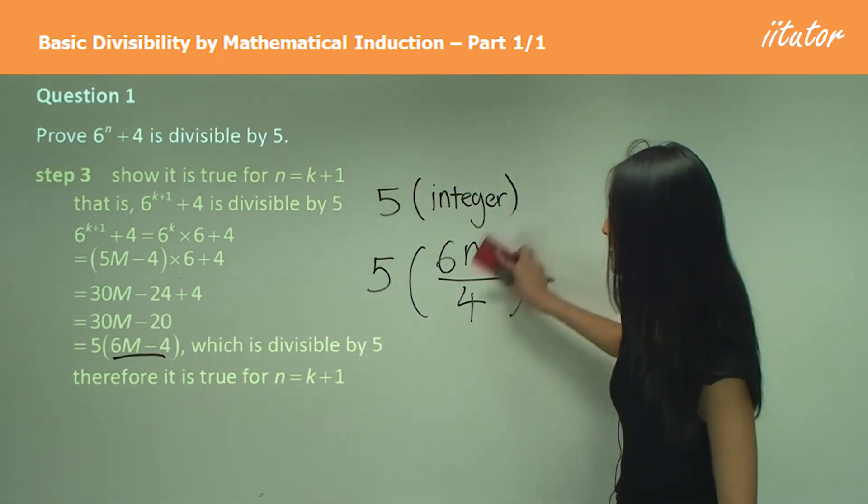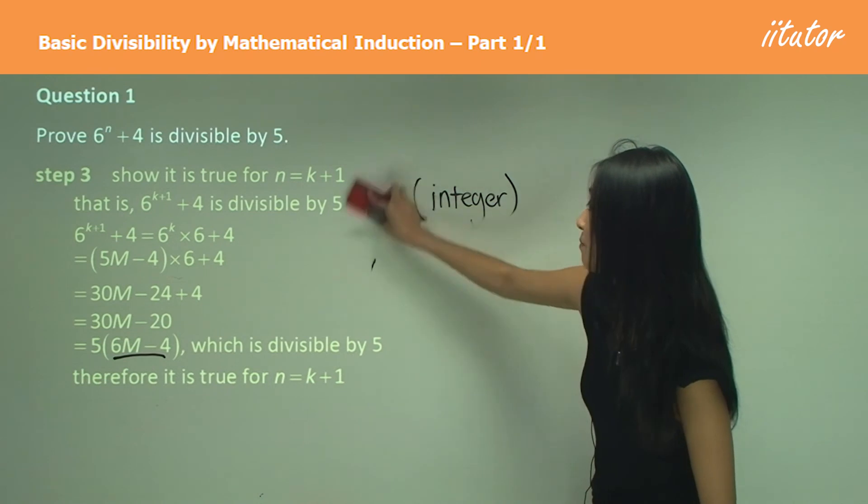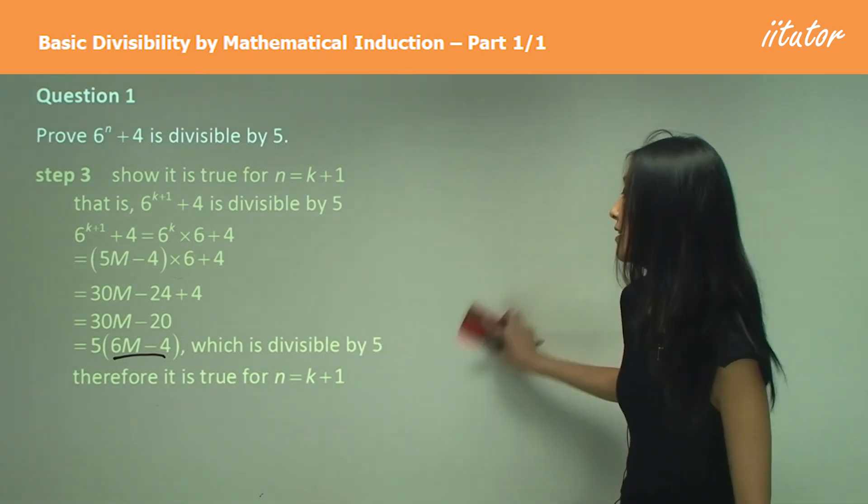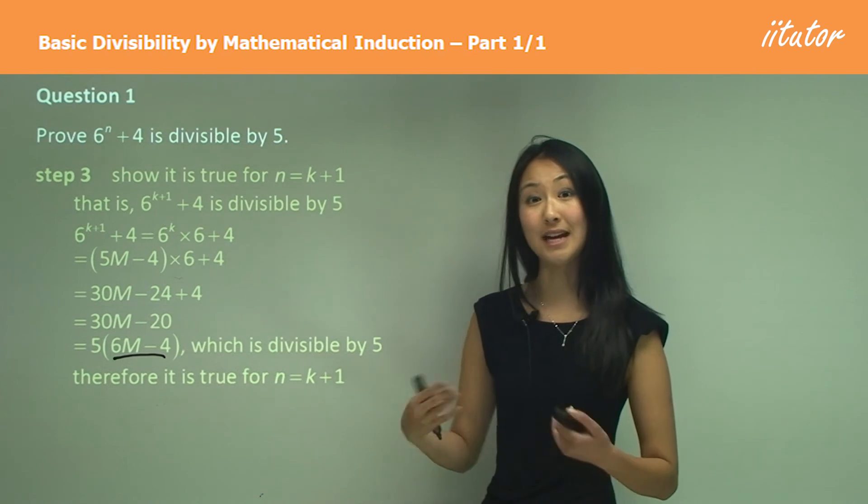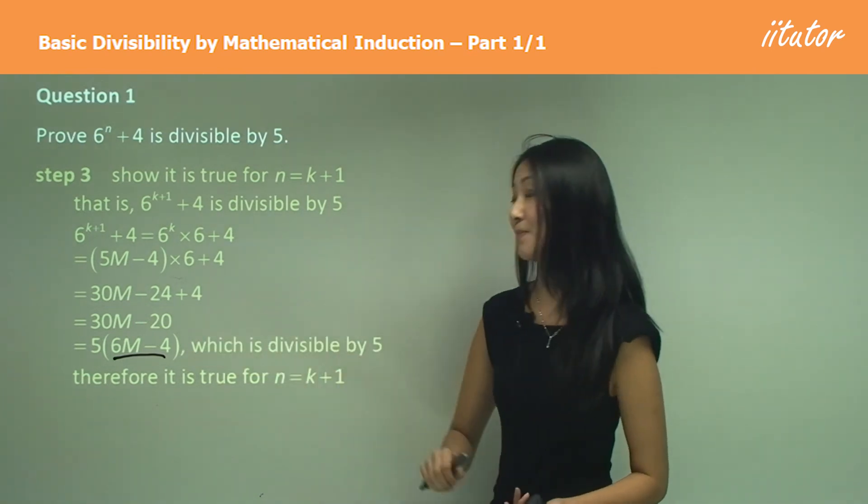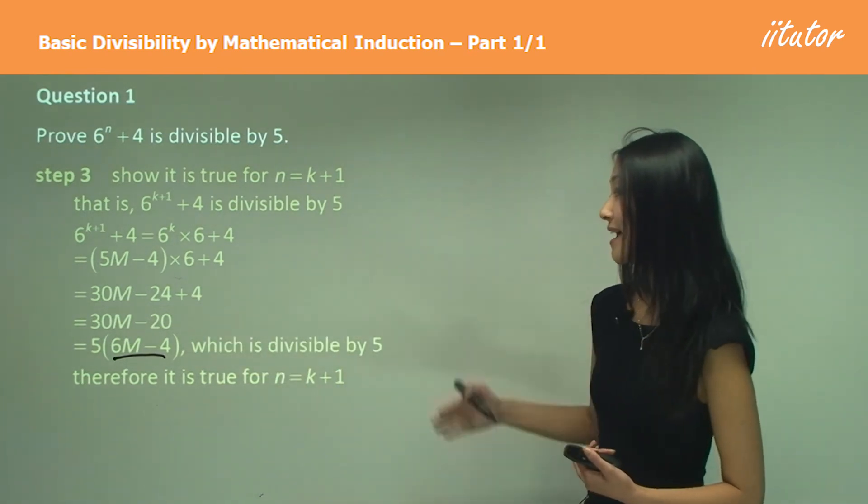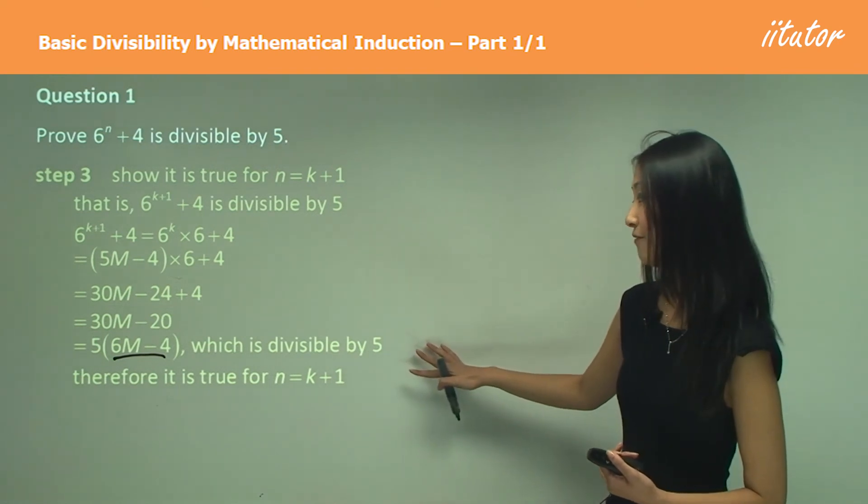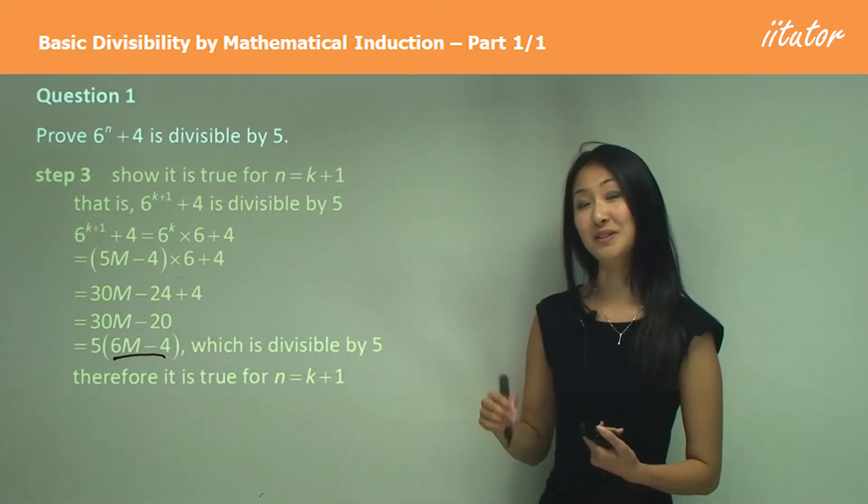So remember you always have to check that what's in the bracket is definitely an integer. And you can see that because it's 6 times m, and m we made into an integer originally, minus 4, and there's no fractions or decimal places, then that must be an integer. So that's why we can say therefore it is divisible by 5 and true for n equals k plus 1.